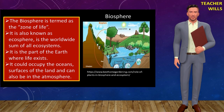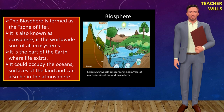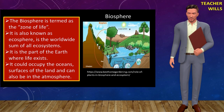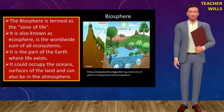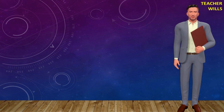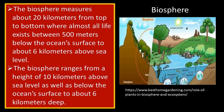We will now proceed to the last subsystem of the Earth, which is the Biosphere. The Biosphere is termed as the zone of life, also known as Ecosphere, and is the worldwide sum of all ecosystems. It is the part of the Earth where life exists, occupying the oceans, surfaces of the land and the atmosphere. It extends from the deepest root systems of trees to the dark environment of ocean trenches to lush rainforests and high mountaintops. The Biosphere measures about 20 kilometers from top to bottom, with almost all life existing between 500 meters below the ocean's surface to about 6 kilometers above sea level.